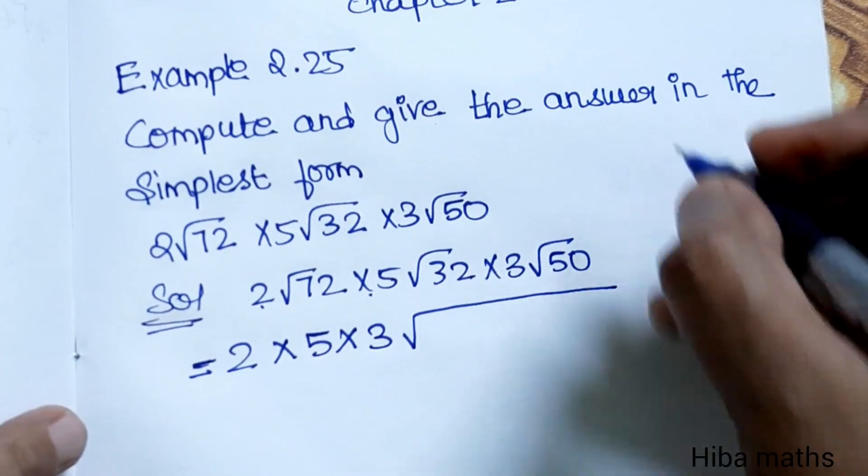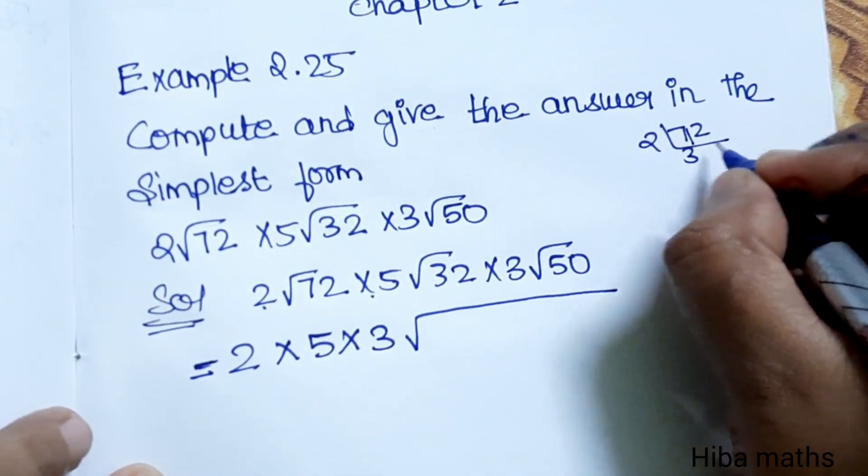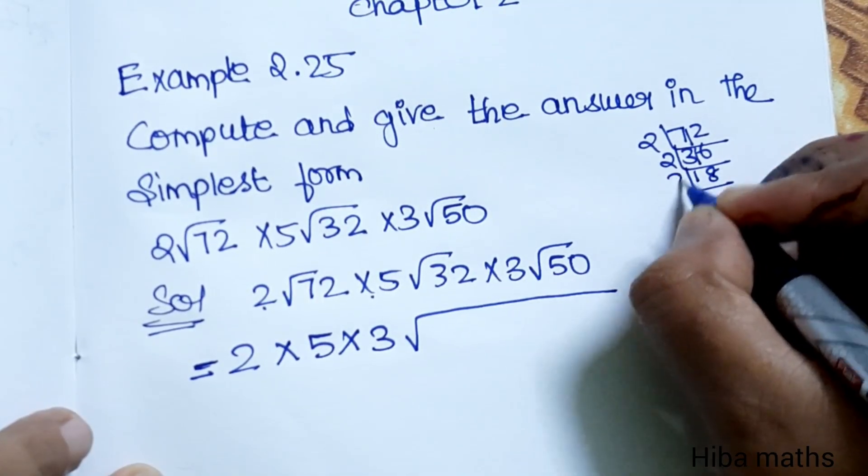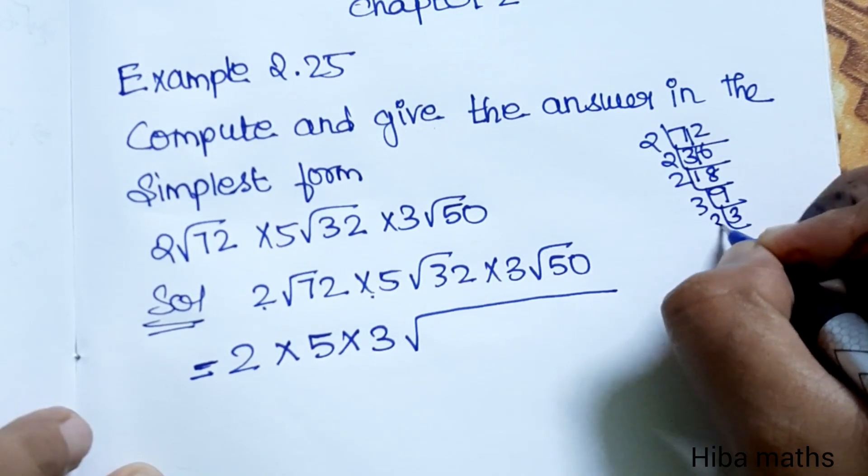We multiply 72. 2, 3 is 6, balance 1. 2, 6 is 12. 2, 1 is 2, balance 1. 2, 8 is 16. 2, 9 is 3. 3 is 3, 1 is 3. So 2 into 2 into 2 into 3 into 3.